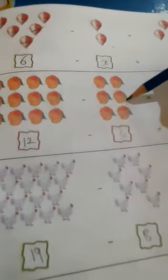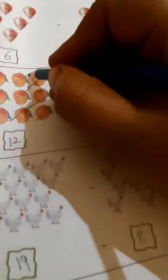1, 2, 3, 4, 5, 6. You ate 6 mangoes from 12. Now, you ate 6 mangoes from 12. So, you cross 6 mangoes from 12. 1, 2, 3, 4, 5, and 6.